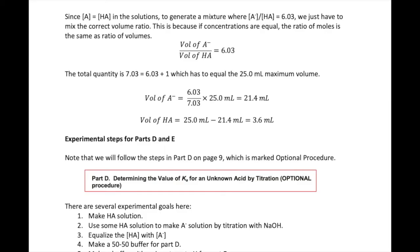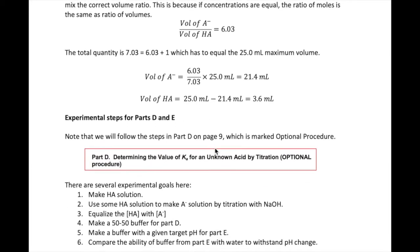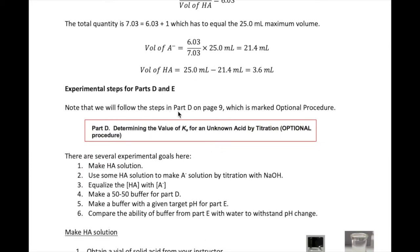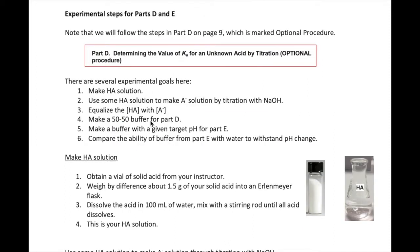Welcome back, everyone, to the third video in this series on the pH and buffer lab. In this video, I will discuss the actual steps you need to take to perform parts D and E of the lab. Make sure you have your lab notes ready to write down the details I'm about to discuss. In your lab procedure, there are two procedures written for part D. We will carry out the optional procedure, which starts on page 9, so please write that down on your notes. In total, there are six different things to do in parts D and E.